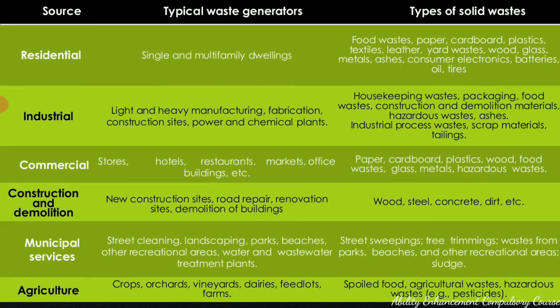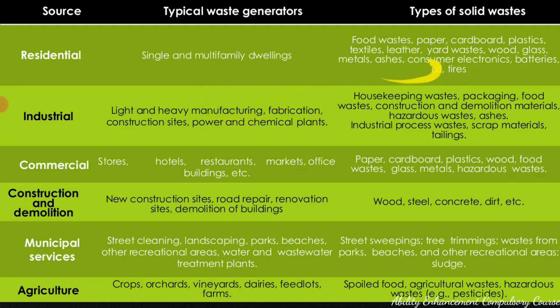These are the different waste generators. It includes residential complexes where you mainly have families, and from there you have a lot of food waste that is generated. You can have paper and cardboards, clothes, textile waste, a lot of electronics — e-waste that is getting generated — and oil. These are some of the common waste generated from the domestic or residential setup.